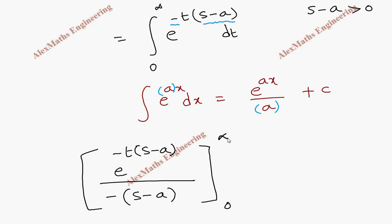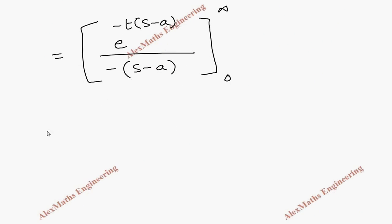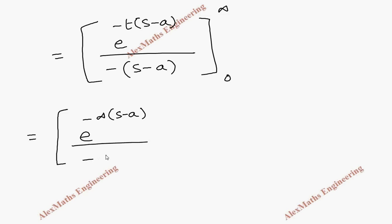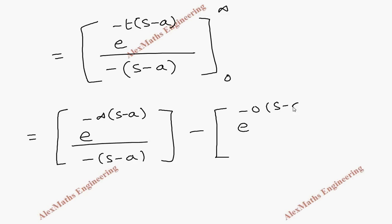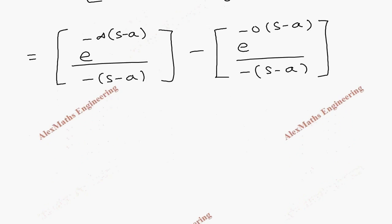Now we substitute the limits from 0 to infinity. First, the upper limit: substituting t = infinity gives e^(−∞·(s−a)) divided by −(s − a). Then substituting the lower limit t = 0 gives e^(−0·(s−a)) divided by −(s − a).